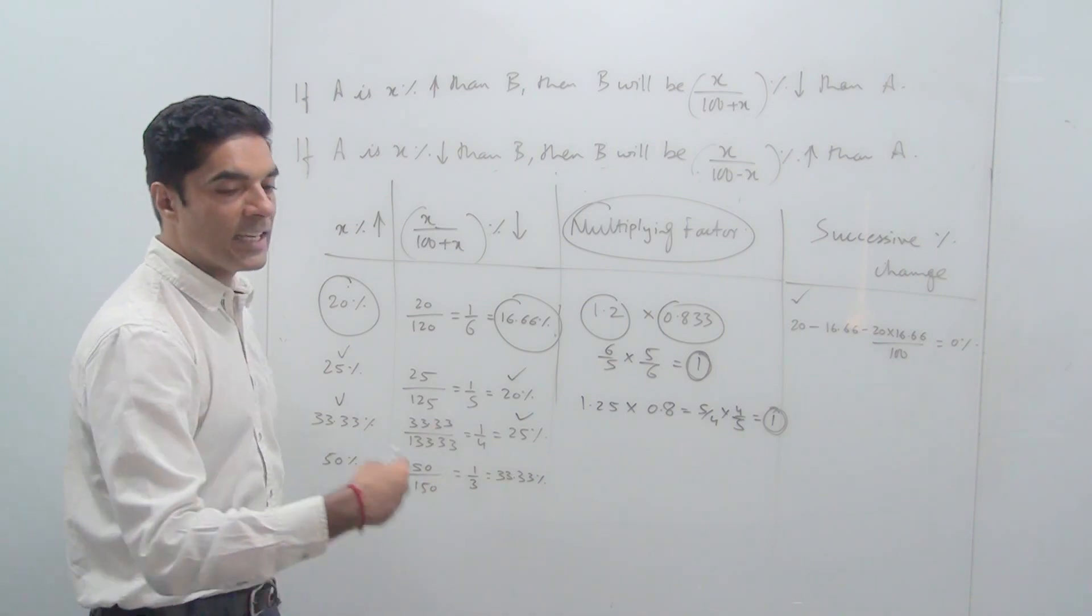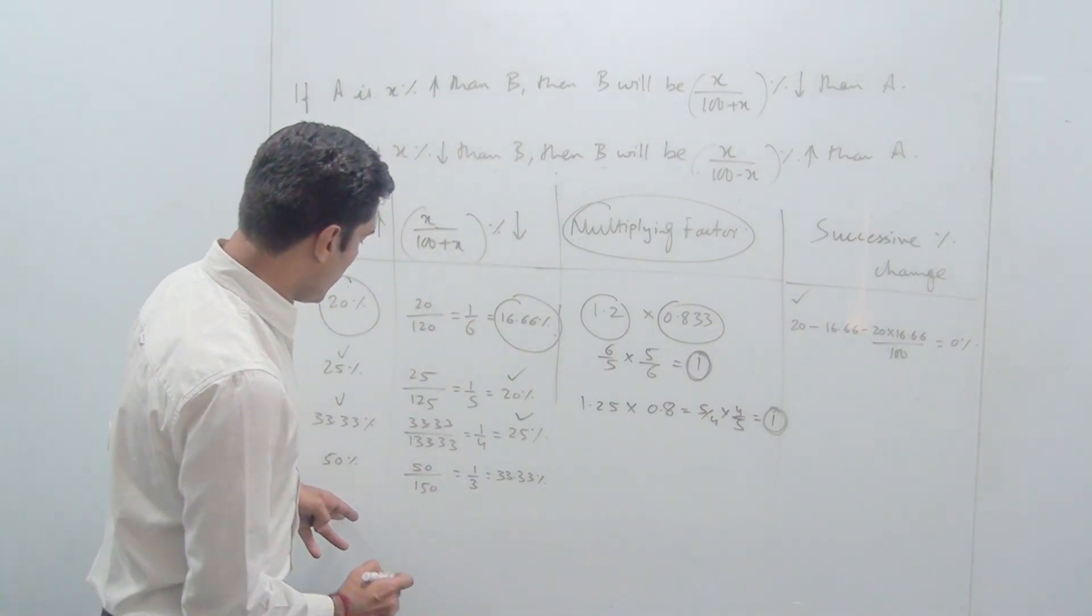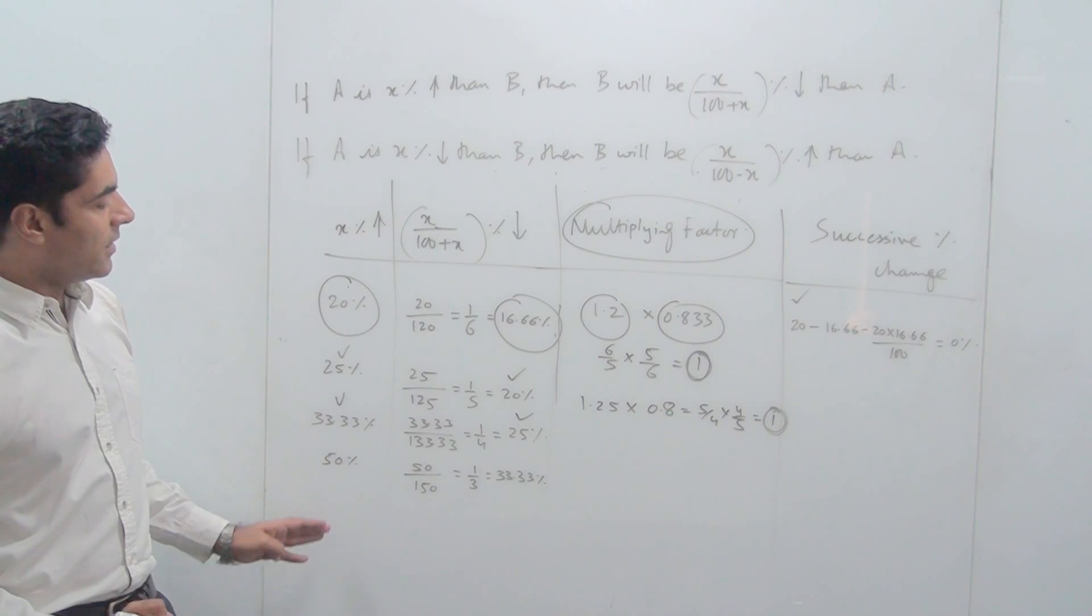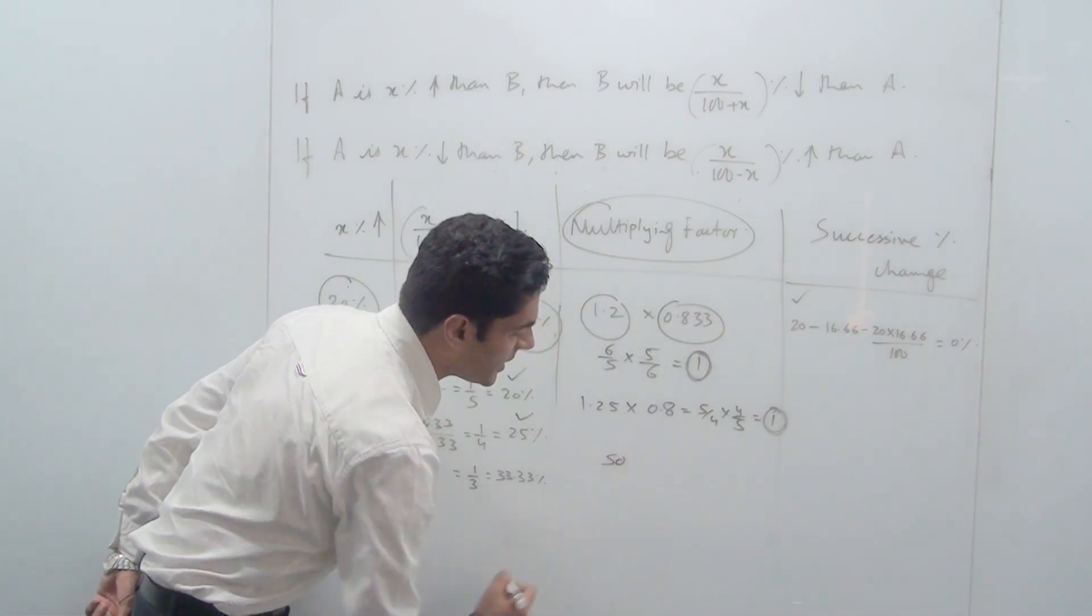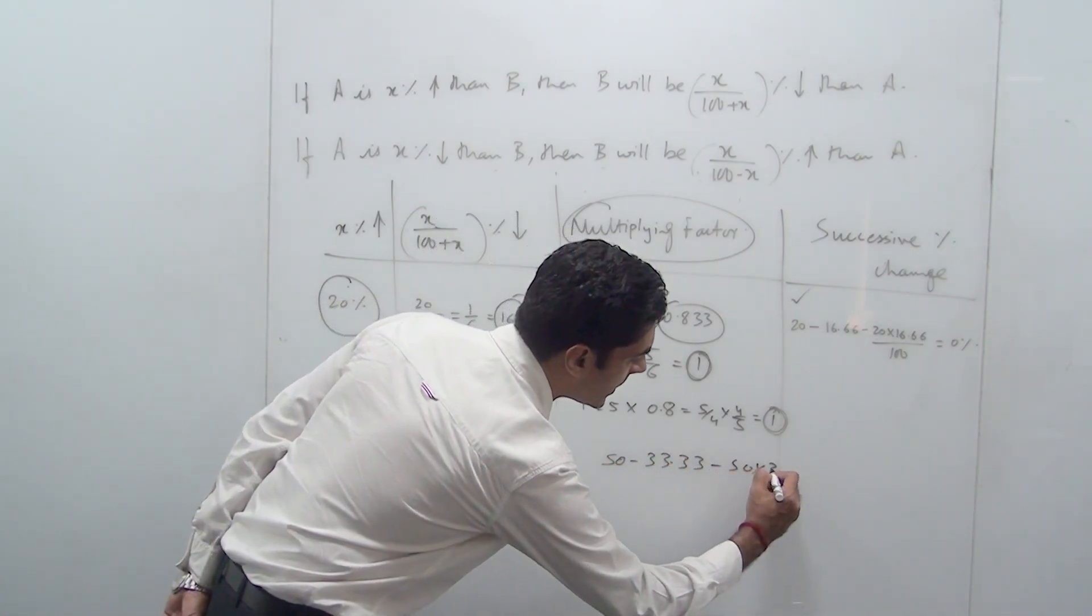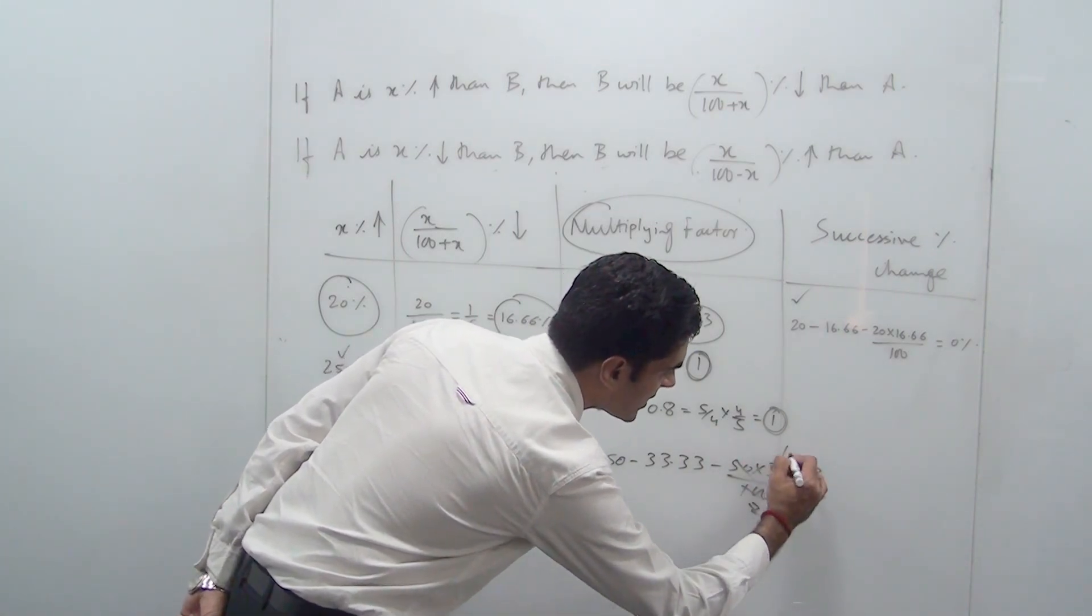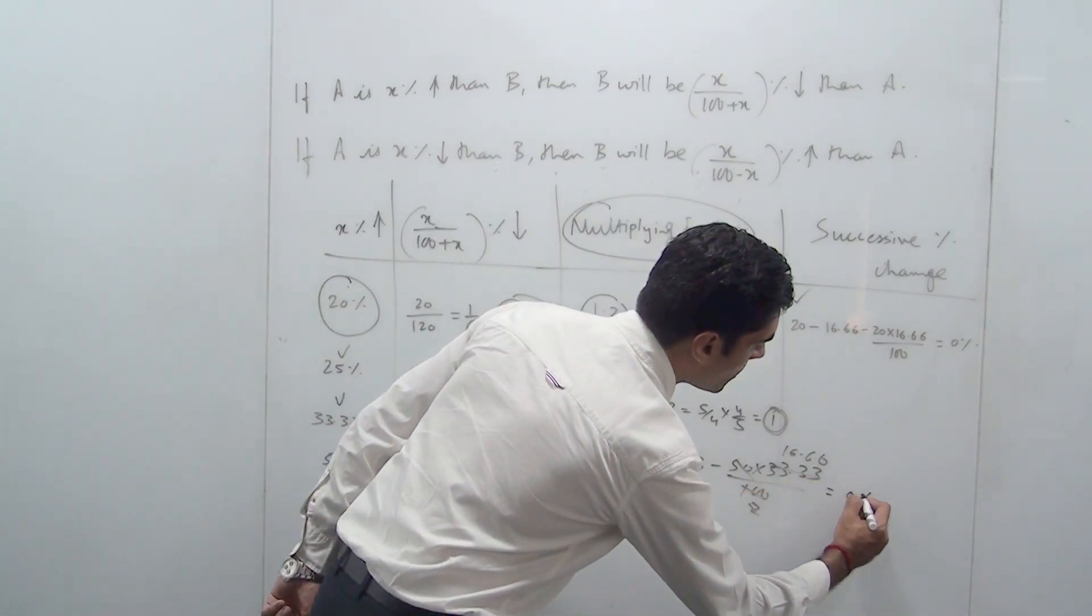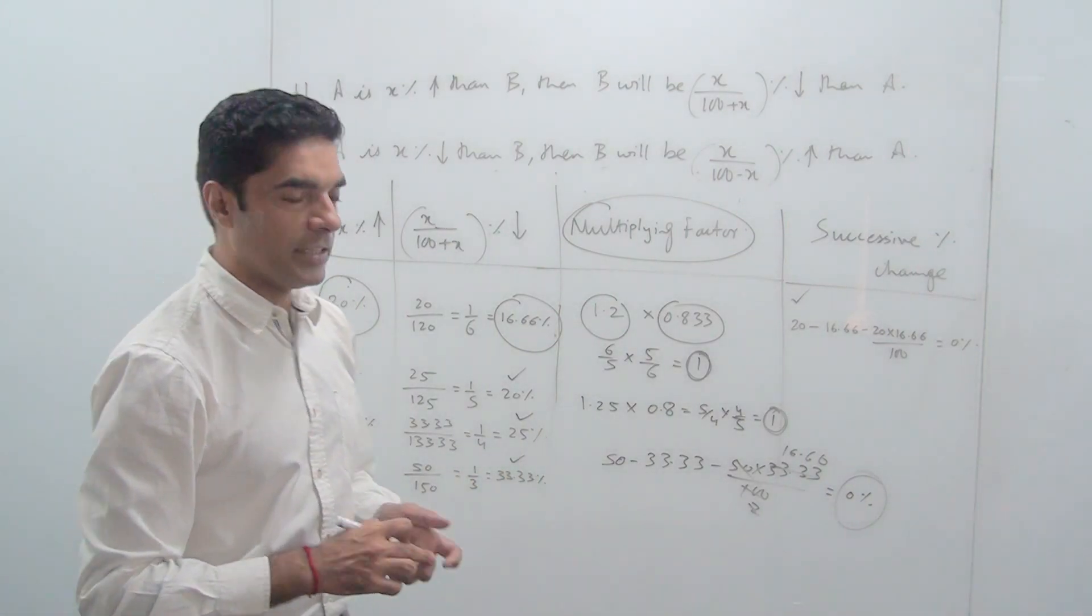So these two components, basically when they increase and decrease, the net change becomes 0 percent. That means if I wanted to do an increase and a decrease of 50 and 33.33 percent simultaneously, with the help of successive percentage change, it would have been an increase of 50 means plus 50, a decrease of 33.33 means minus 33.33, minus 50 into 33.33 divided by 100. Look at this now. This is 2, this is 16.66. 16.66 and 33.33 gives you minus 50. 50 minus 50 comes out to be 0 percent. That means this is the compensating factor for 33.33 percent.